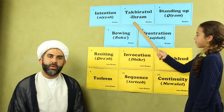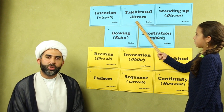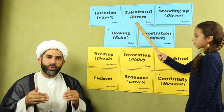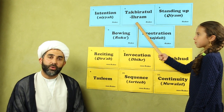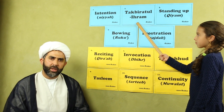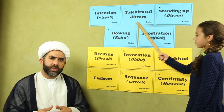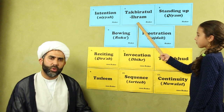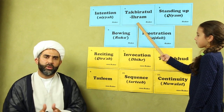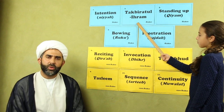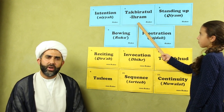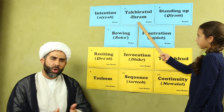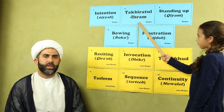Number two is takbiratul ihram, which means you are going to say Allahu Akbar. When you do that, you are entering into prayer. Ihram means that something that would be halal and permissible for you to do now becomes forbidden — you have entered into the sanctity of prayer. So you are not allowed to talk, not allowed to eat, not allowed to walk away from the qibla, and so on.